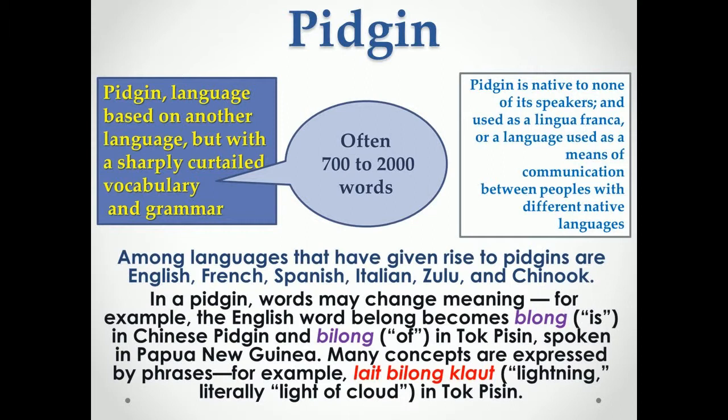In a pidgin, words may change meaning — for example, the English word 'belong' becomes 'belong' meaning 'is' in Chinese Pidgin, and 'belong' meaning 'of' in Tok Pisin, spoken in Papua New Guinea. Many concepts are expressed by phrases — for example, 'gras bilong fes' meaning 'lightning', literally 'light of cloud', in Tok Pisin.